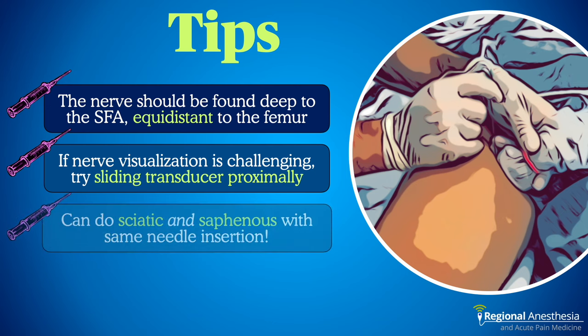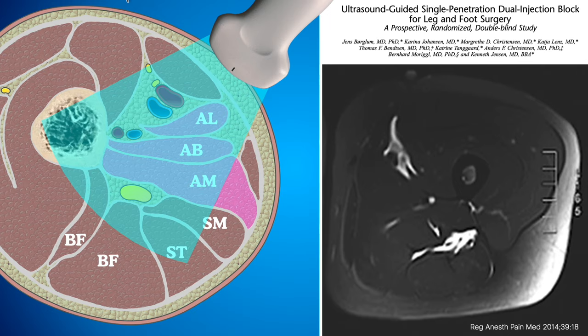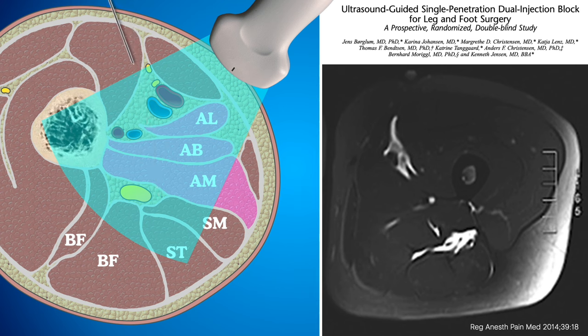If you're planning to block the saphenous nerve at the same time — say for foot and ankle surgery — it's possible to do both with one needle insertion. These authors describe the single-penetration dual-injection technique, where the sciatic nerve is blocked first and the needle is withdrawn and redirected beside the femoral artery to block the saphenous. It's a two-for-one deal in the mid-thigh.